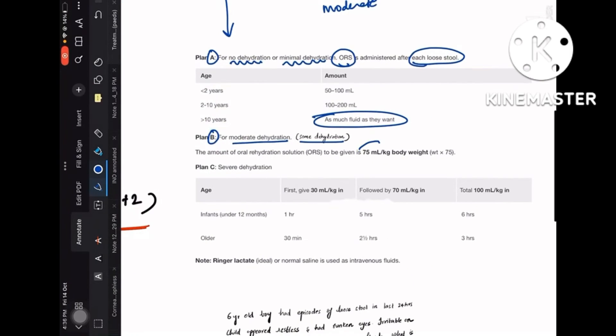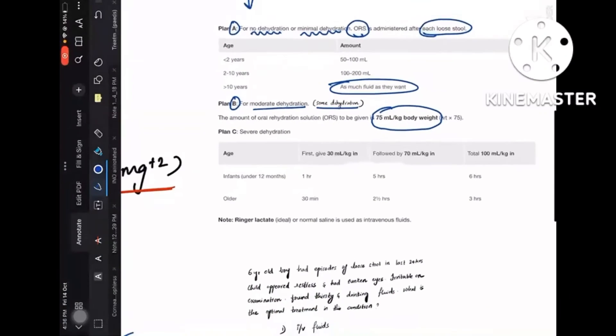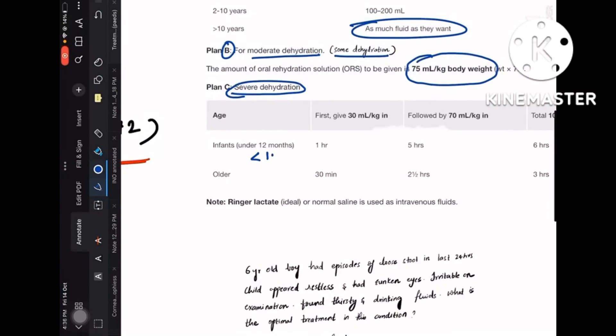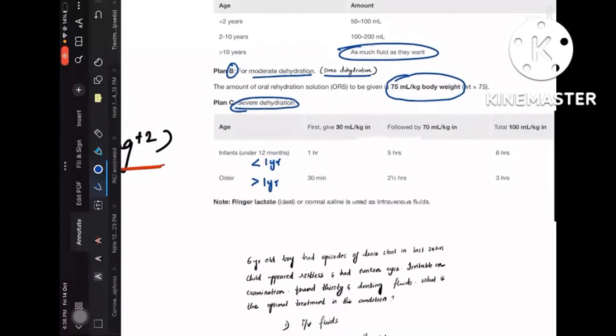And coming to Plan C, which is severe dehydration, it depends upon the age—if the child is less than 1 year or greater than 1 year. So start with less than 1 year. So 1 year, this is 1 hour into 5, which is 5 hours. This is 30 minutes—you have to halve it and do into 5, which is 2 and a half hours. So in total, for less than 1 year kids, you have to give fluid in 6 hours duration.